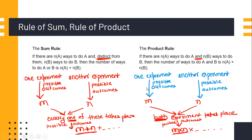These are the basics of rule of sum and rule of product. In simple words, rule of sum is used when you are having 'or' between the two experiments, and rule of product is used when all the experiments are taking place at the same time.